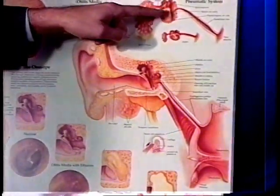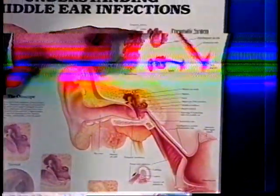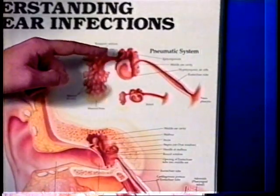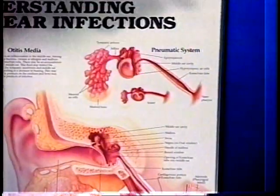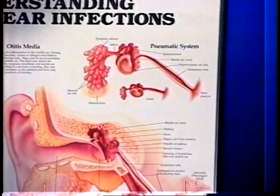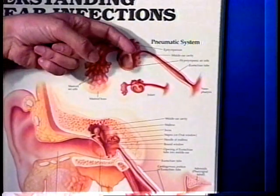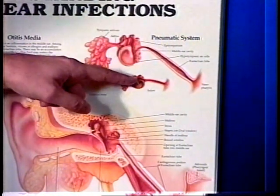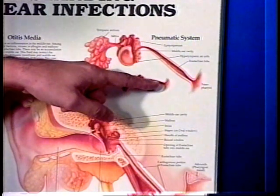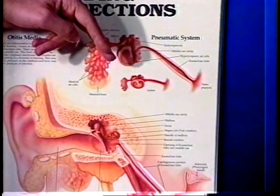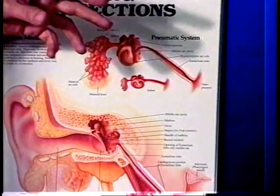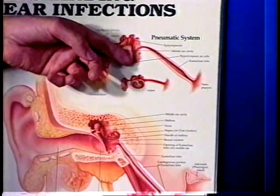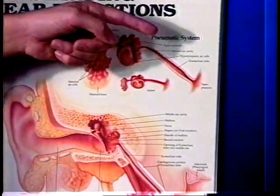The other problem, particularly in children, is this. In adults, the angle of the eustachian tube from the middle ear space to the back of the nose sits at approximately a 40 to 45 degree angle. In a small child, it sits at approximately a 10 degree angle, and this changes as they grow. Roughly between the ages of four to six or five to seven, it achieves an adult position of a 45 degree angle.